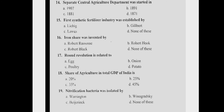Question 16: The iron share was invented by Answer A, Robert Ransom. Question 17: The Round Revolution is related to Answer D, potato. Question 18: The share of agriculture in total GDP is Answer B, 25%.